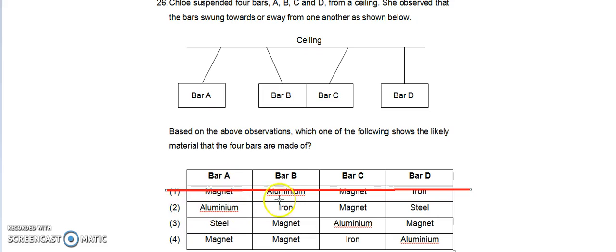Bar A aluminum, bar B iron. This option is definitely out.